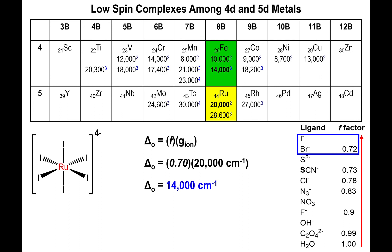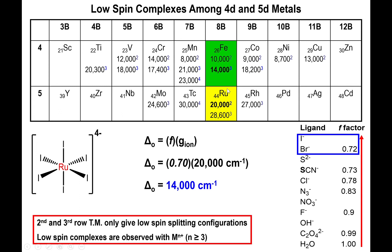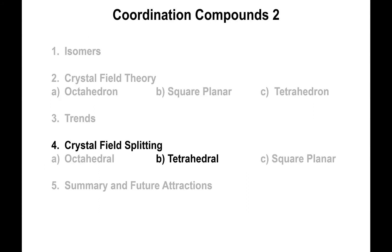For iron with a delta octahedral of 14,000, using a weak enough ligand could bring it down to 13,000 or below, making the complex high spin. For first row transition metals, whether you use a weak field or strong field ligand matters most. Second and third row metals will almost always be low spin, but do the calculation and compare to the cutoff to make your judgment. In the next video, we'll look at tetrahedral and square planar complexes.